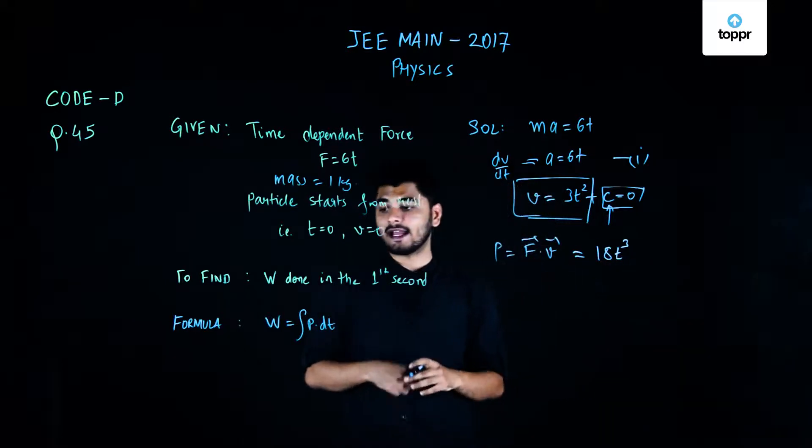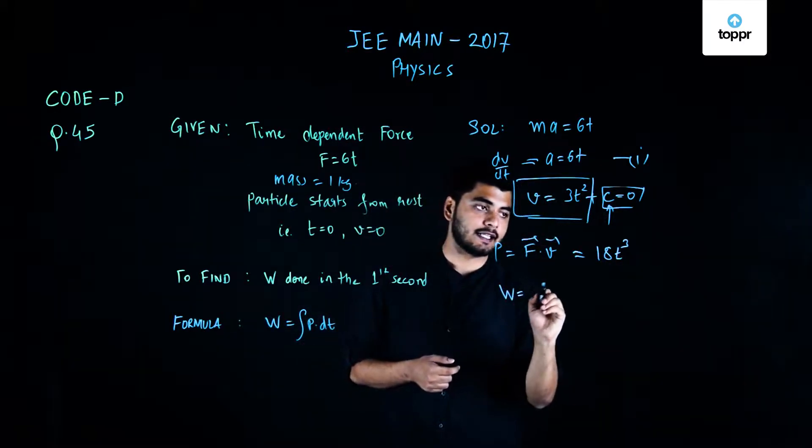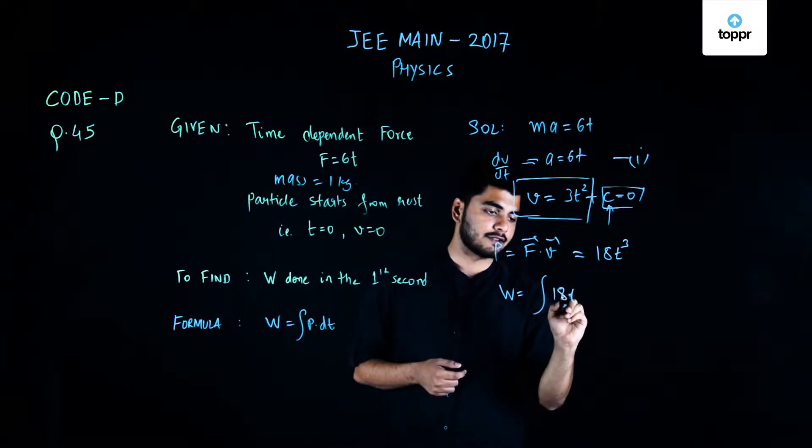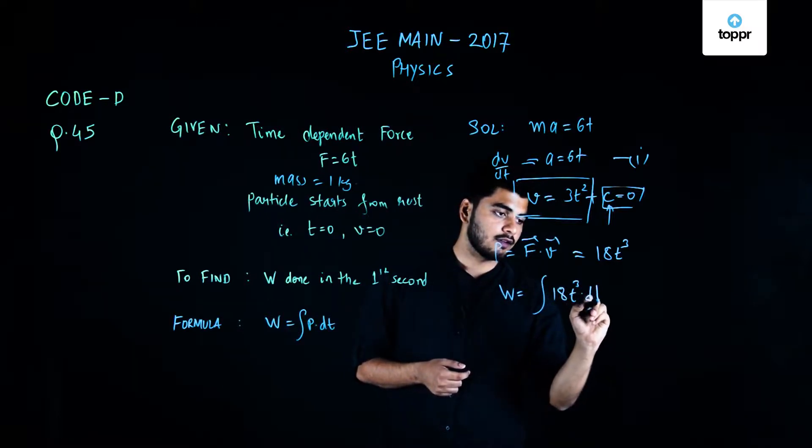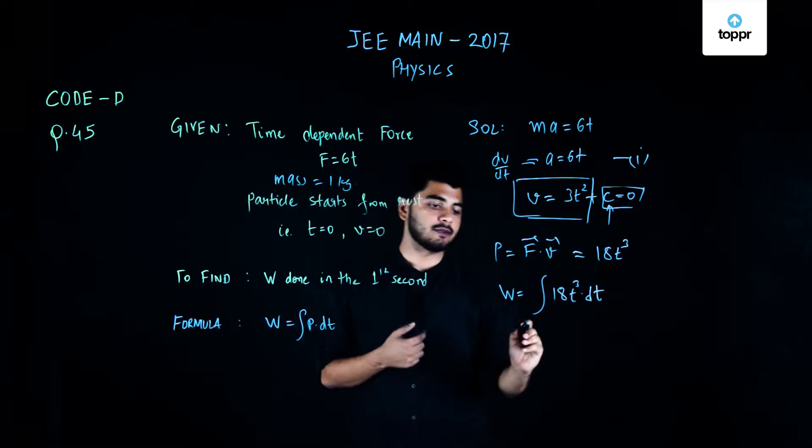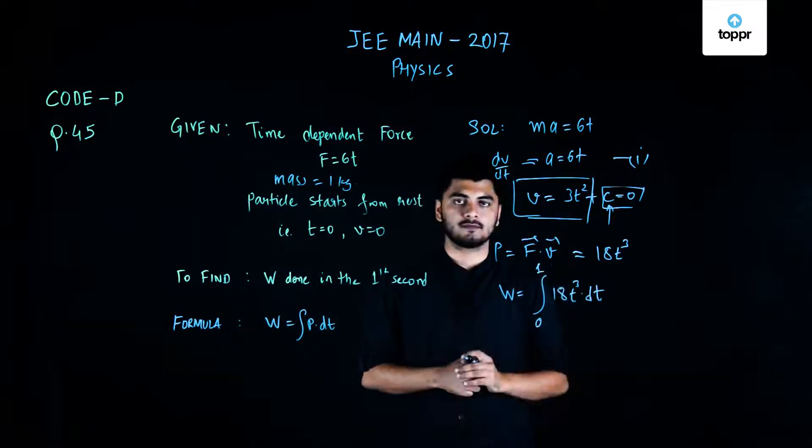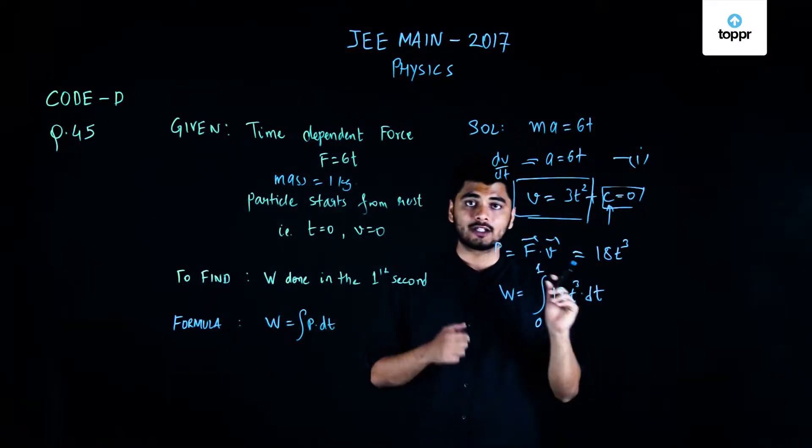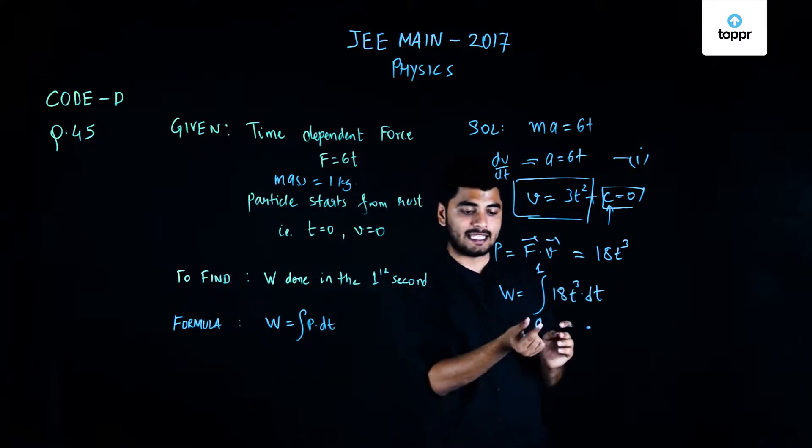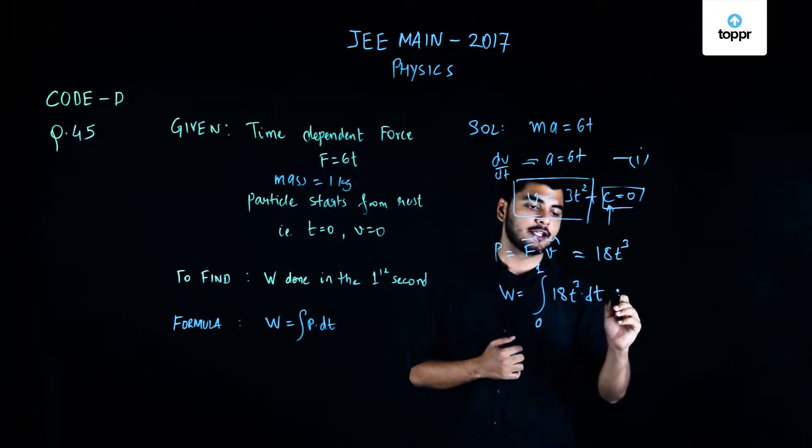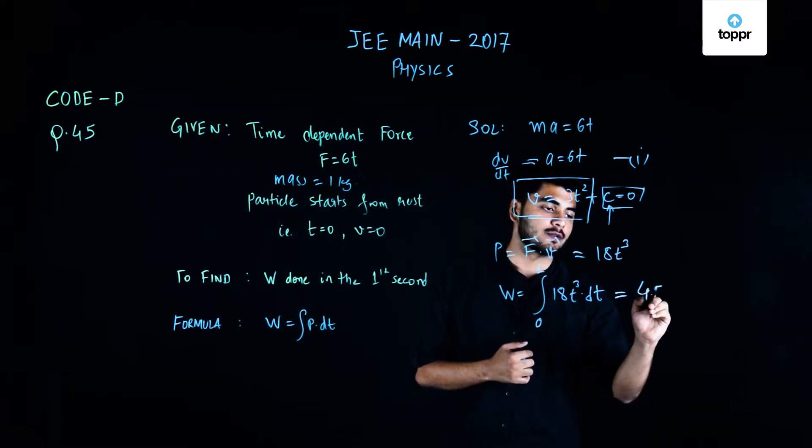In order to find the value of work done, all I need to do is integrate this value of power as a function of time from t equals 0 to t equals 1 second. And when you integrate this 18t cube dt, that is the work done from t equals 0 to t equals 1 second, you get the value as 4.5 joules.